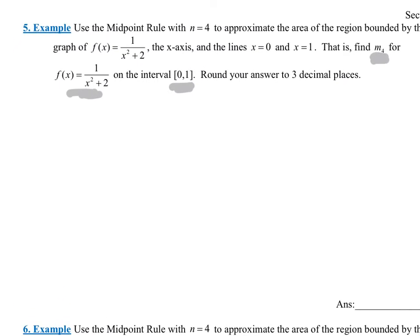If we round our answer to three decimal places, I don't know if they mean the final answer or each individual step. So what I'm going to do is just start rounding at each individual step, because this is going to get absolutely insane. The first part: we need to consider how many rectangles there are. They want four rectangles.